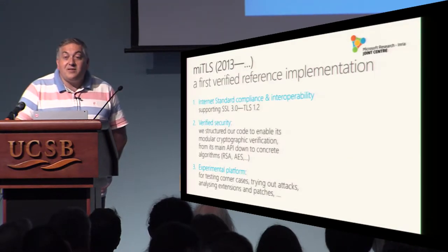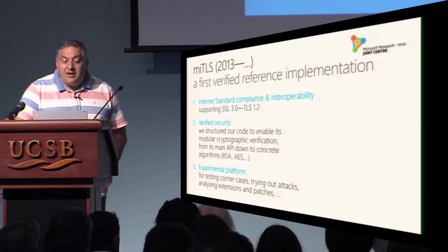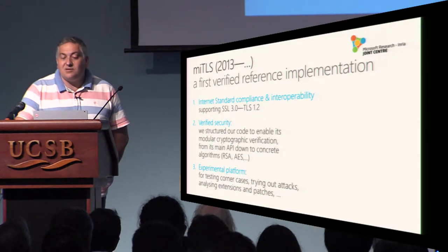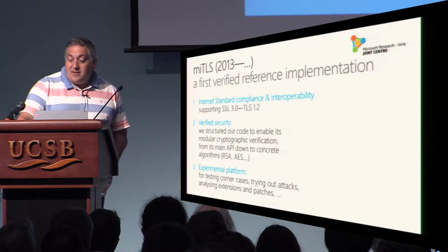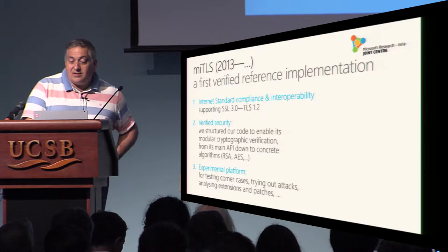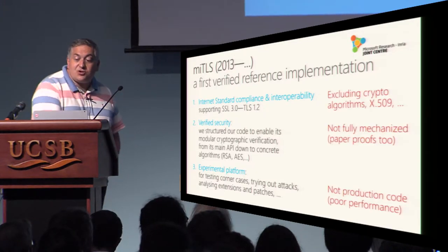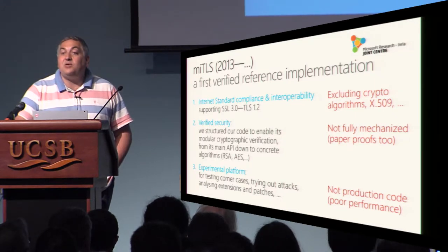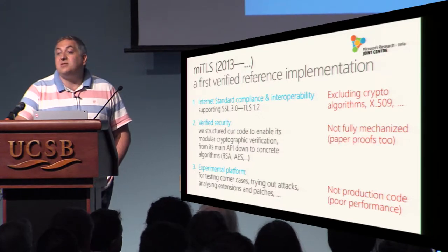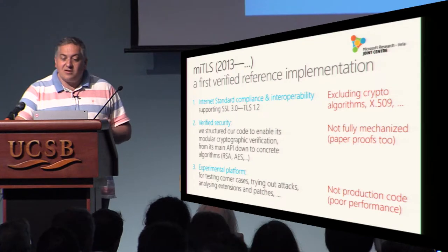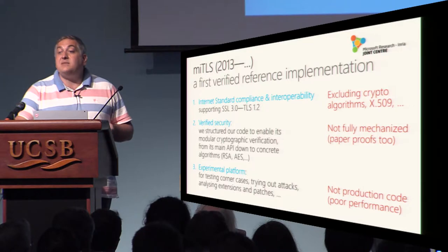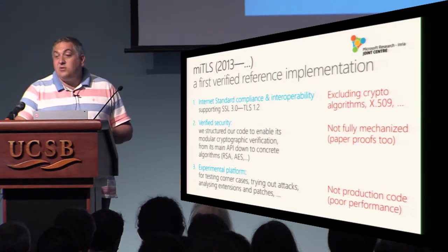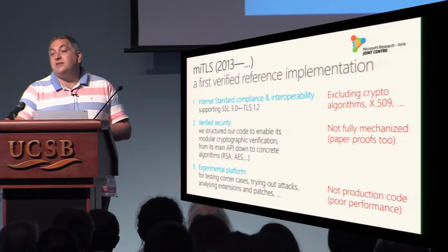We have been working on TLS for a bit longer. We started with miTLS in 2013, where the goal was to understand why the protocol was secure and to build a reference implementation — not something directly usable. We tested interoperability but certainly not performance. It was only up to TLS 1.3 and there were quite a few limitations: we excluded the actual cryptographic primitives and constructions, sticking really to the letter of the RFC. The proof was machine-supported but not fully mechanized — we had paper proofs for the main cryptographic arguments. It was good enough to test, and we used it to find state machine attacks systematically, but it was not good enough to be deployed.